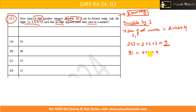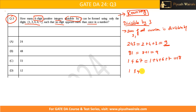Let's take another example: 1467. One plus four plus six plus seven — five plus six is eleven, eleven plus seven is eighteen. Eighteen is divisible by three, so 1467 is divisible by three. Now take 1346: one plus three plus four plus six equals fourteen. Fourteen is not divisible by three, so 1346 is not divisible by three.